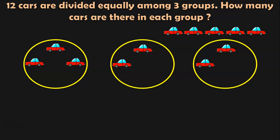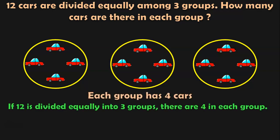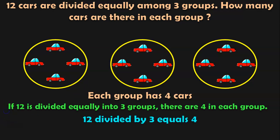Take the next car and put it in the first group. Take the next car and put it in the second group. Now take the next car and put it in the third group. You are still left with 3 more cars, so you can give 1 car to each group. Finally, how many cars are there in each group? Each group has 4 cars. So if 12 is divided equally into 3 groups, there are 4 in each group. So if 12 is divided by 3, it is equal to 4.